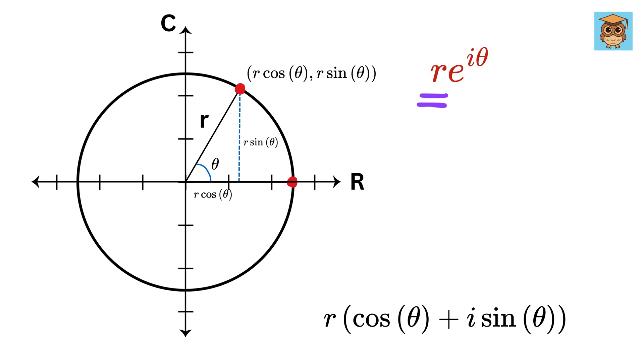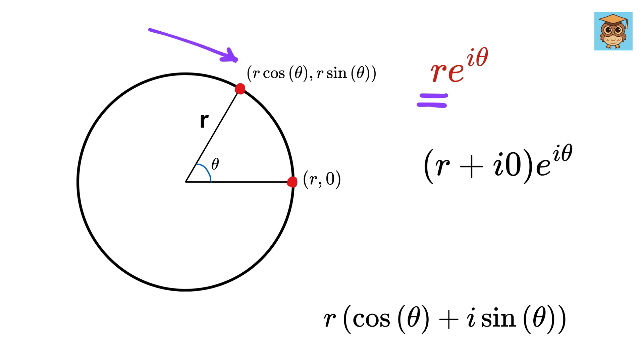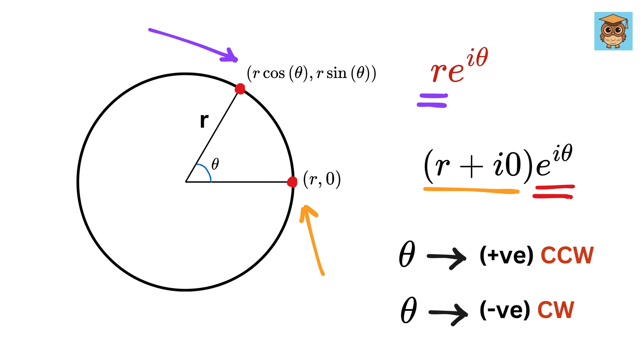Also, this r can be written as r + i × 0. Thus, this point can be obtained by taking this point and multiplying it with e^(iθ). Note that θ will be positive counterclockwise sense, and it will be negative clockwise.